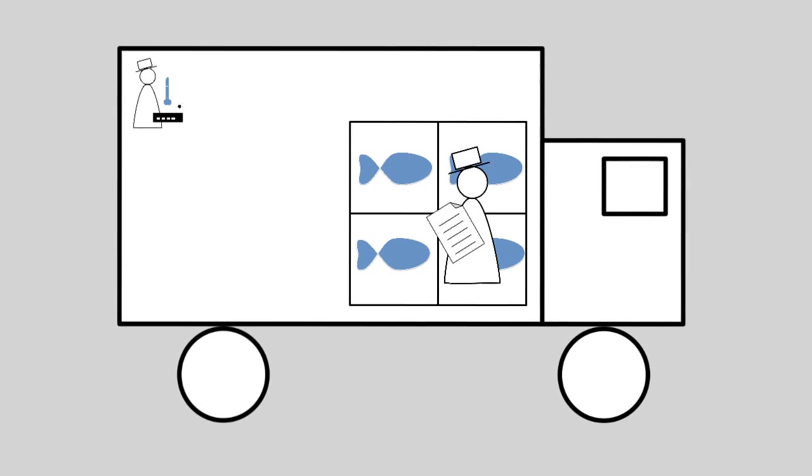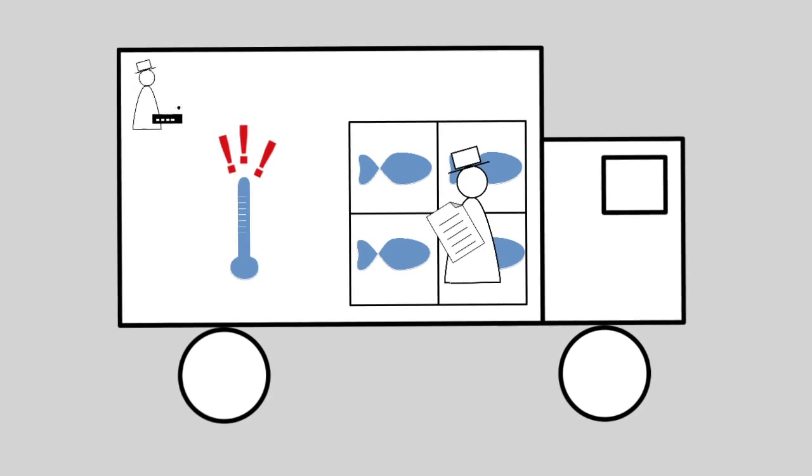It will then ask the truck agent for a local sensor device capable of measuring temperature. The truck agent informs it about the sensor device and the intelligent cargo submits a request to be notified when it gets too warm in the truck.